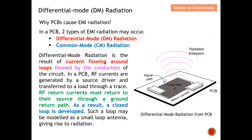Remember, all signals need to have a return path. So the signal path plus the return path actually form a loop. When you form this kind of loop, it potentially becomes a source of differential mode radiation. As you can see from this diagram, it becomes like a small patch antenna that radiates — this is the issue.